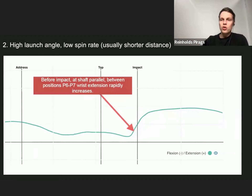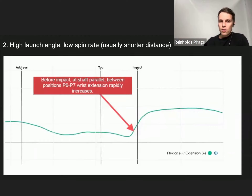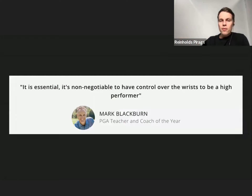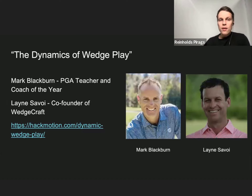Both shots need to be learned and applied in different situations. For the high launch shot, you rapidly increase wrist extension before impact. As Mark Blackburn said, it's essential — non-negotiable — to have control over the wrist to be a high performer. Using the HackMotion sensor and data, you can learn these things. Check out the presentation called 'The Dynamics of Wedge Play,' also published on our homepage.